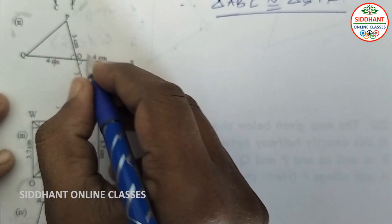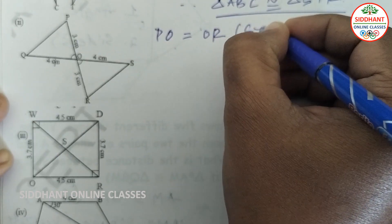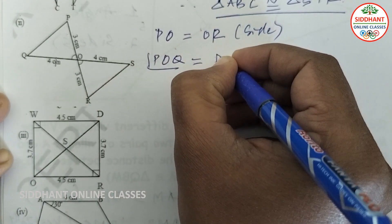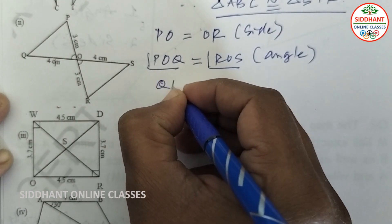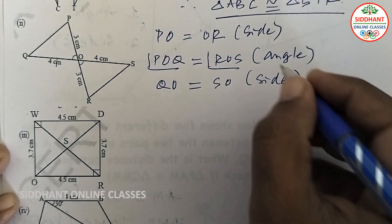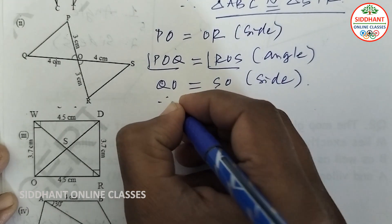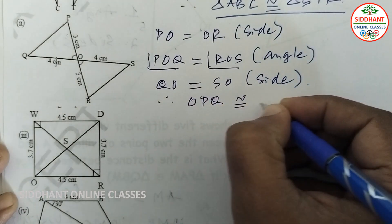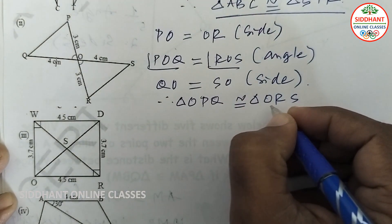For the second pair, PO is equal to OR (side), the angles at O are equal (vertical angles, side), and another corresponding side is equal. The SAS rule applies, so triangle OPQ is congruent to triangle ORS.